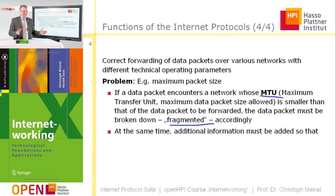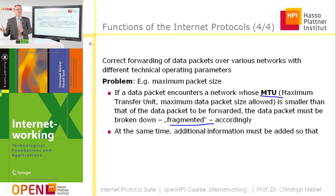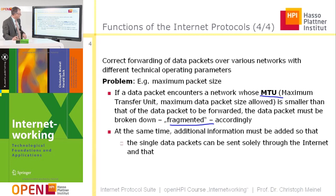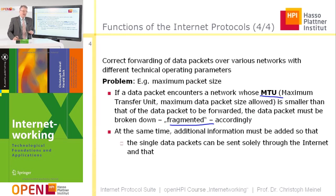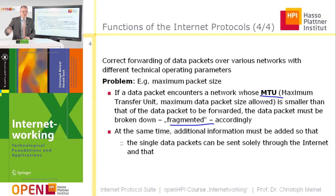When a data packet is fragmented, additional information must be added so the receiver is able to recognize that these are only fragments and can reassemble them into the original data packet. After fragmentation, the packet is small enough to be transferred to the neighboring network. It can happen that a fragment reaches another router which realizes the next network has an even smaller MTU, so fragmentation must be repeated.